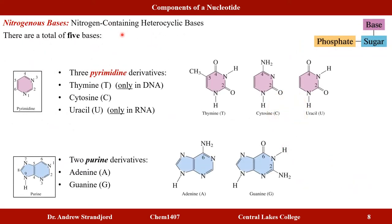The third building block of nucleotides is the nitrogenous bases — nitrogen-containing heterocyclic bases. There are five total, classified into two types. Pyrimidine derivatives have a six-membered heterocyclic ring with two nitrogens: thymine (only in DNA), cytosine (in both RNA and DNA), and uracil (only in RNA). Purine derivatives are two-ring heterocyclic molecules: adenine and guanine.